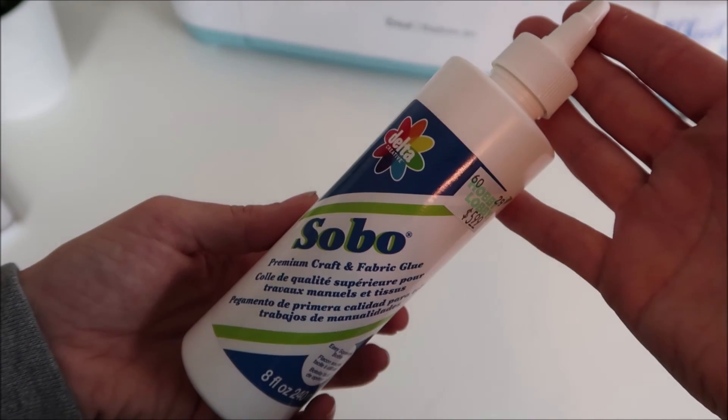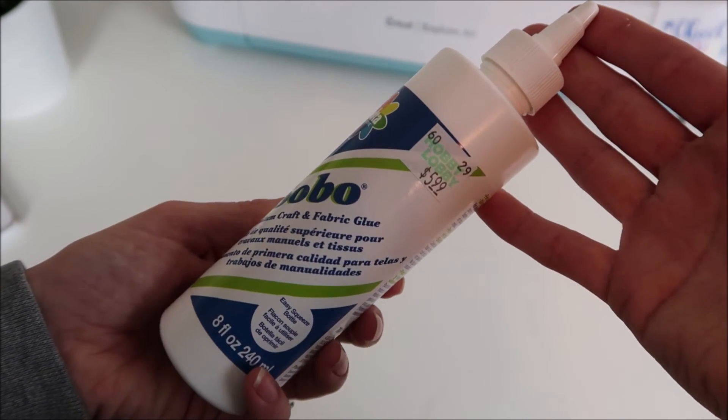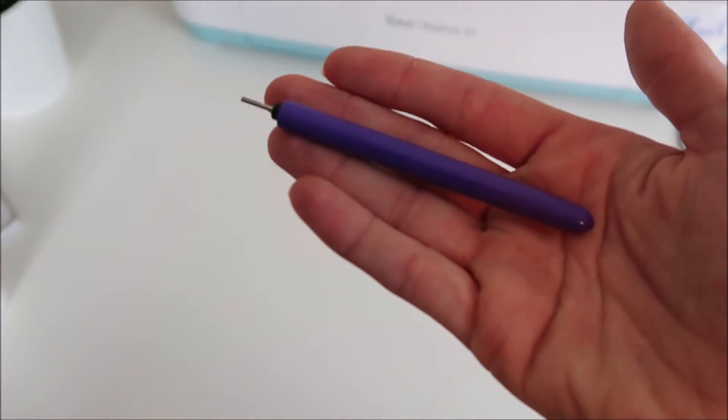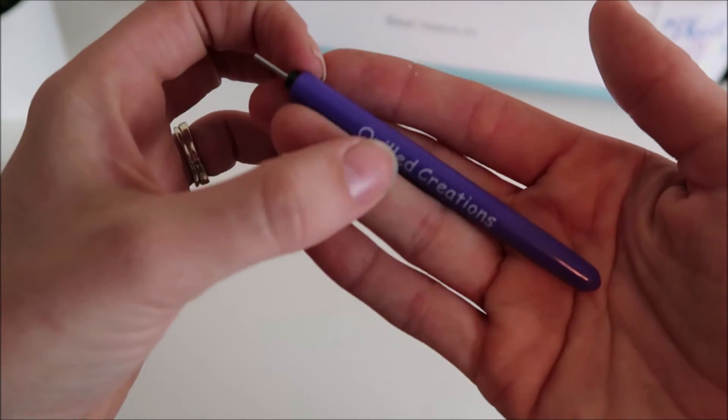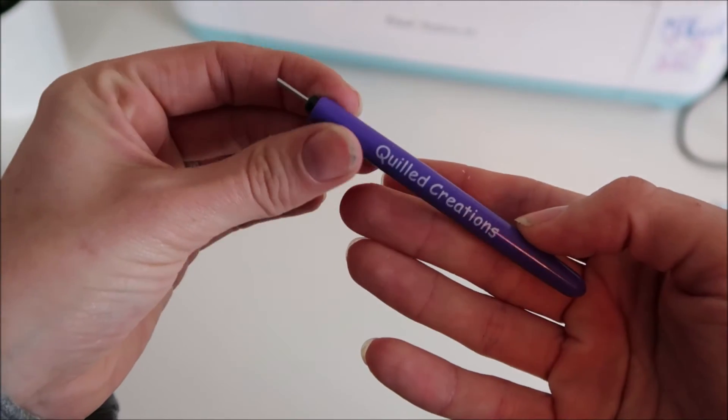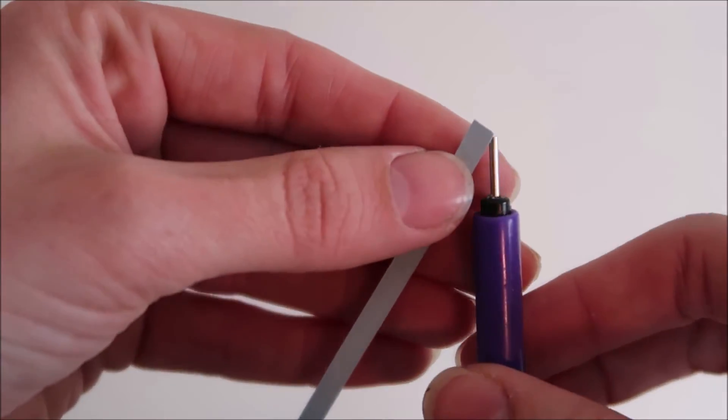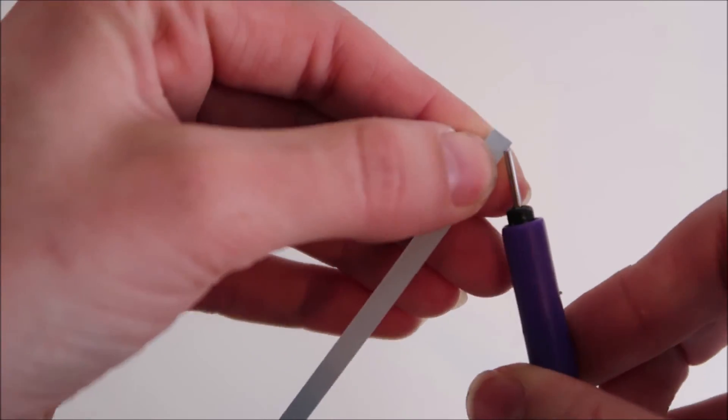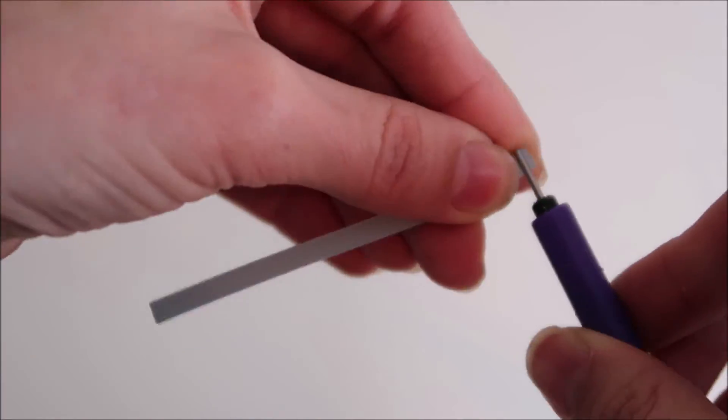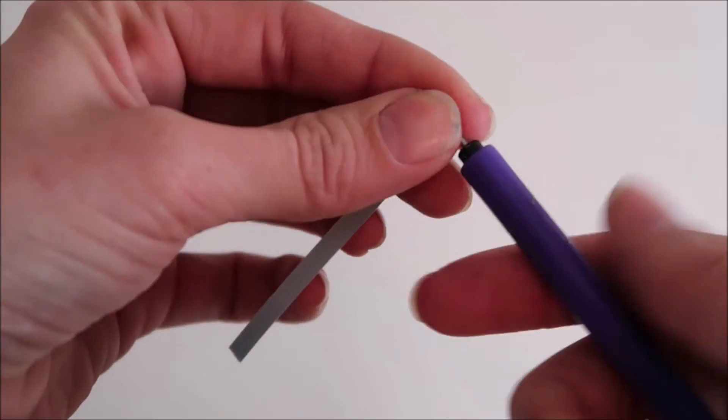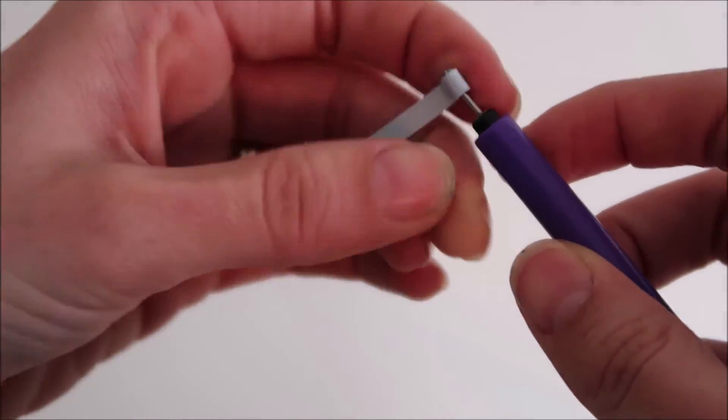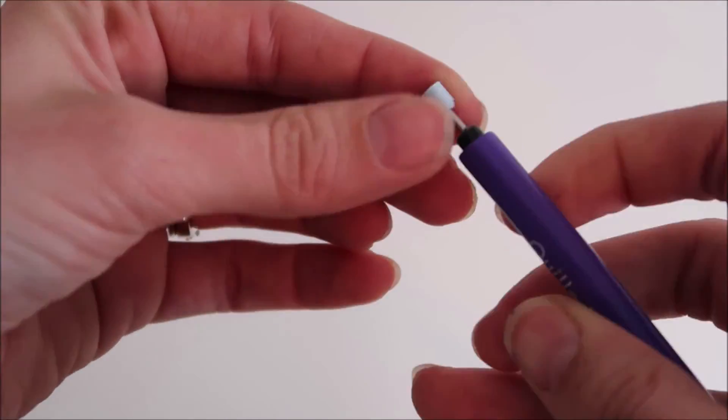I'm using Sobo glue. I hope I'm pronouncing that right. I really like this for cardstock and it dries clear. I'm using my quilling tool to roll the flower petals. I bought this off of Amazon and I will link this down below. I place the cardstock in the slit of the quilling tool and roll it. After it's rolled I let it go so it unravels a little. Then I open up the end of the flap and put some glue onto it and press it together.